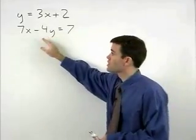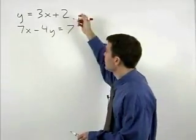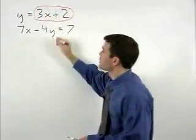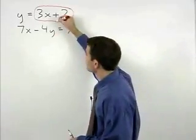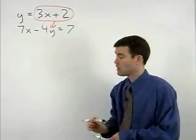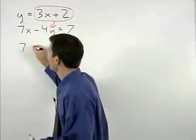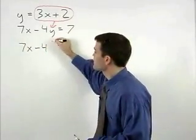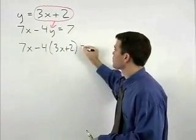In other words, since y means the same thing as 3x plus 2, we can replace the y in the second equation with 3x plus 2. Our second equation then becomes 7x minus 4 times parentheses 3x plus 2 equals 7.